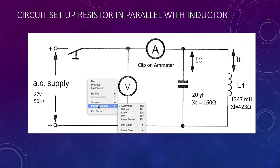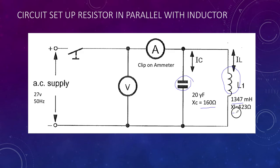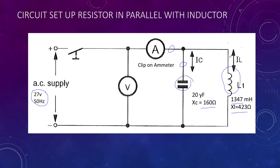For the third configuration, we're using a capacitor and an inductor in parallel — the resistor has been removed. The capacitor is 20 microfarads with an XC of 160 ohms, and the inductor is 1347 millihenries with an XL of 423 ohms. Our supply continues at about 27 volts. We'll again use the clip-on ammeter to measure the main supply current, the capacitor branch current, and the inductor branch current.